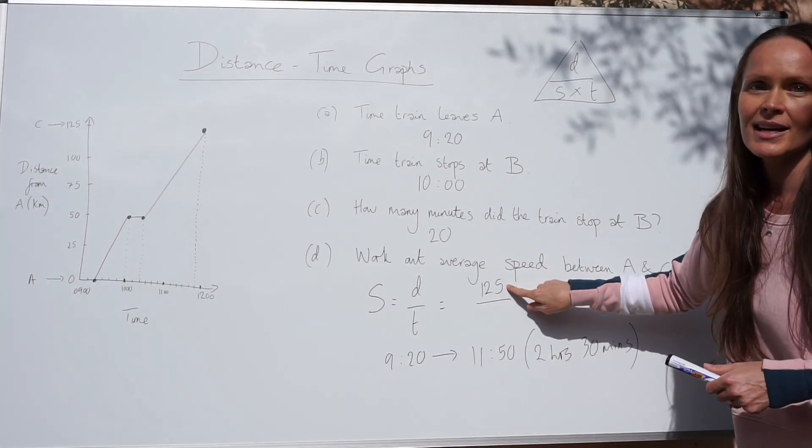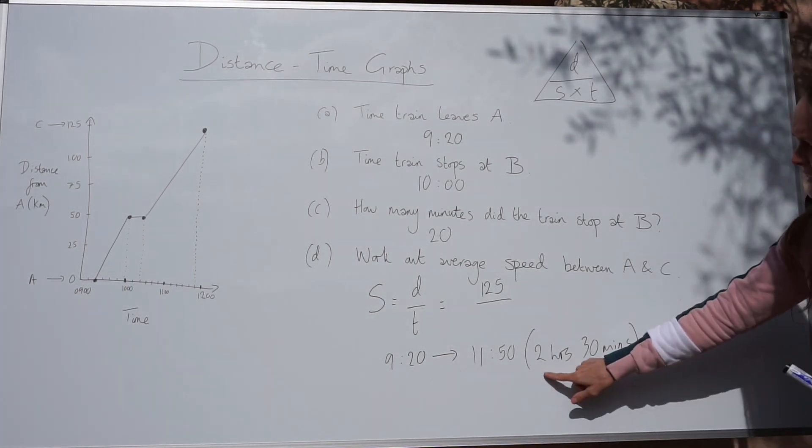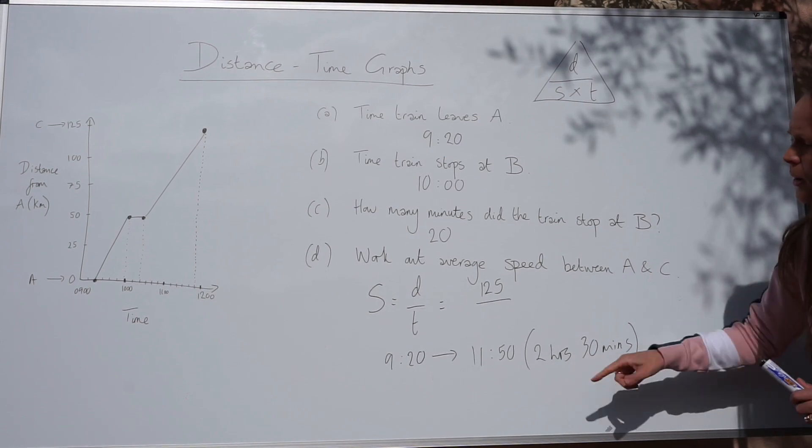So the distance is already in kilometres, so that's no problem. But the time has to be in hours. This is already in hours, the part that's 2.